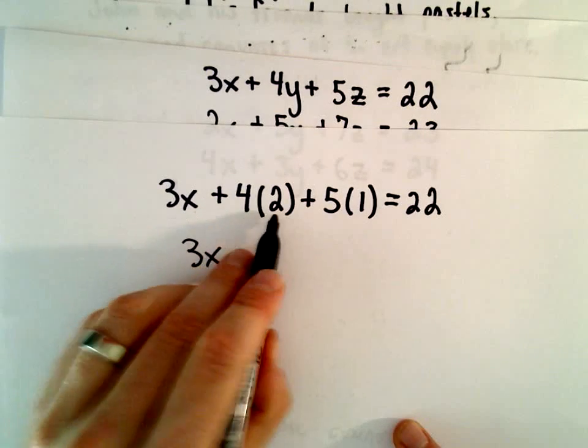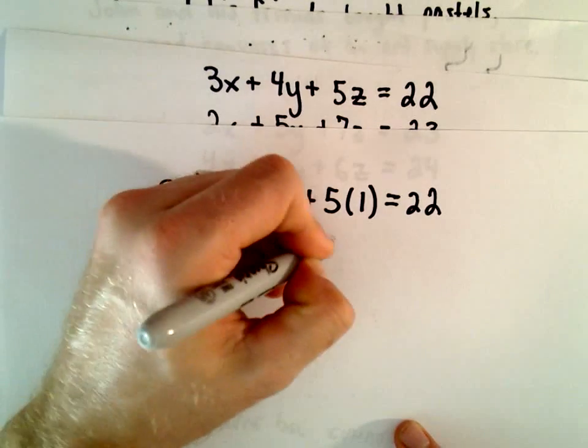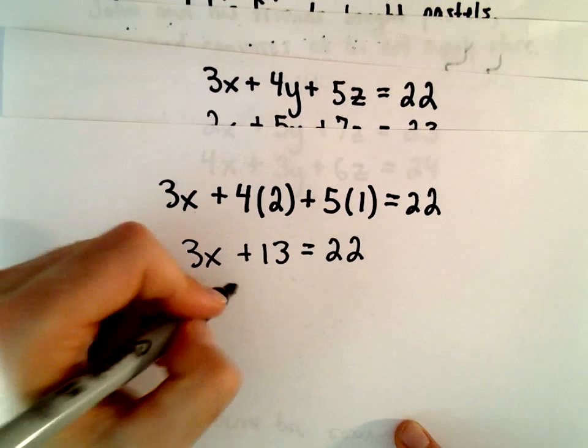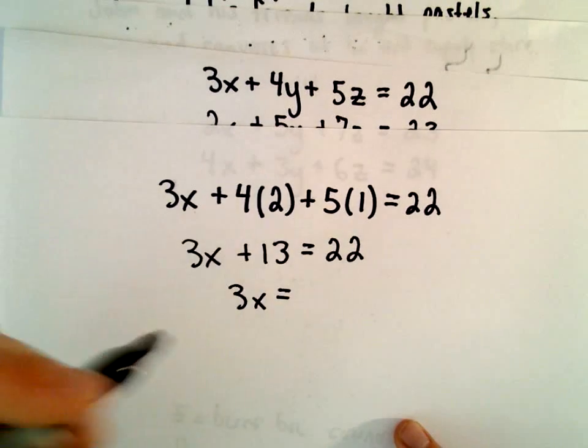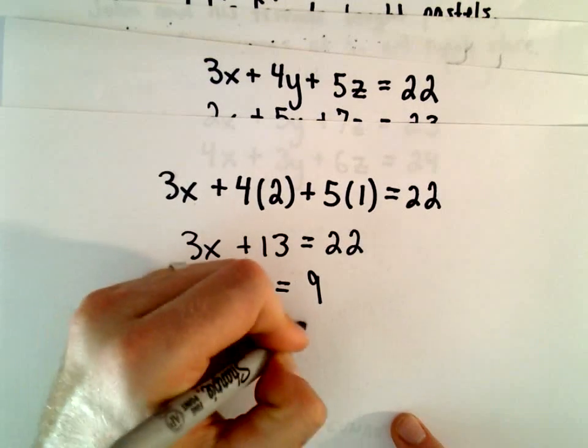Well, 4 times 2 will be 8 plus 5, that'll be 13. If we subtract 13 from both sides, we'll get 3X equals 9. Divide by 3, we'll get X equals 3. So now we have the price per each item.